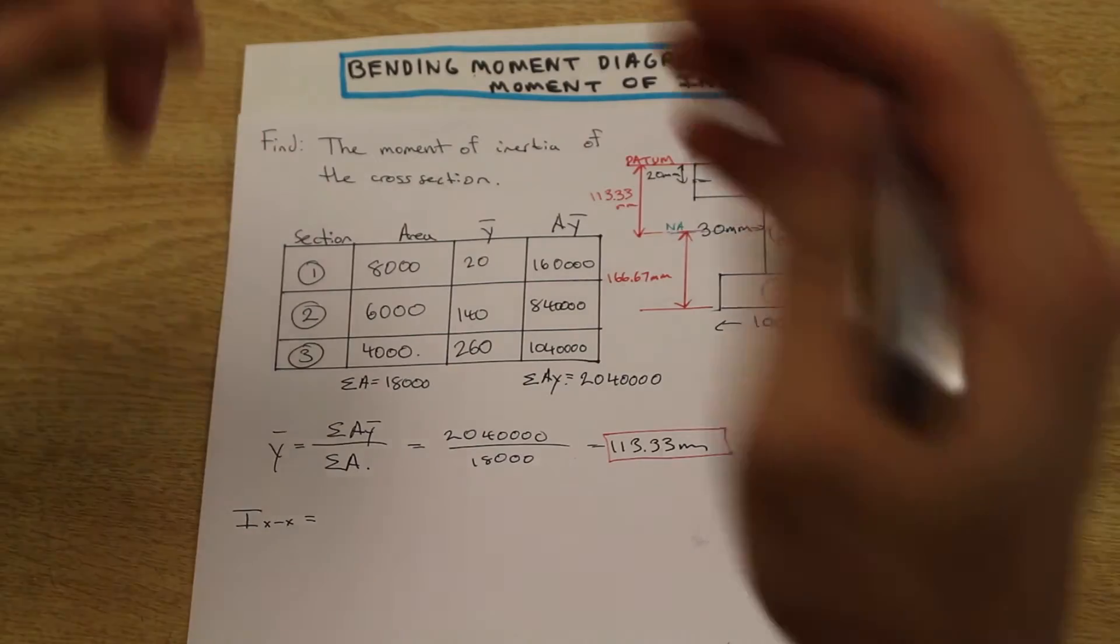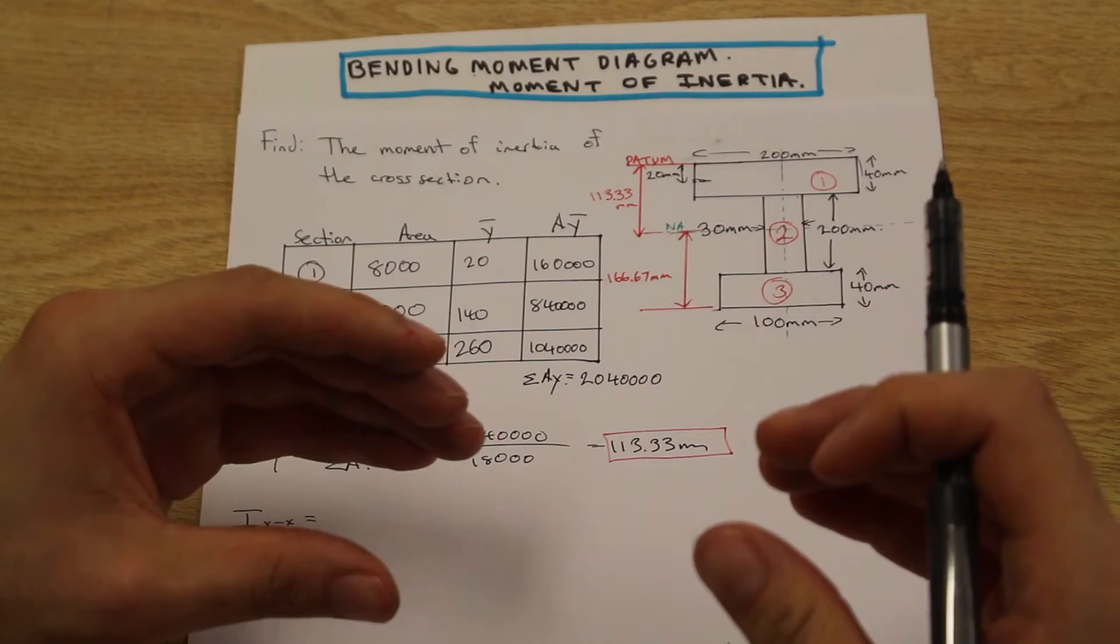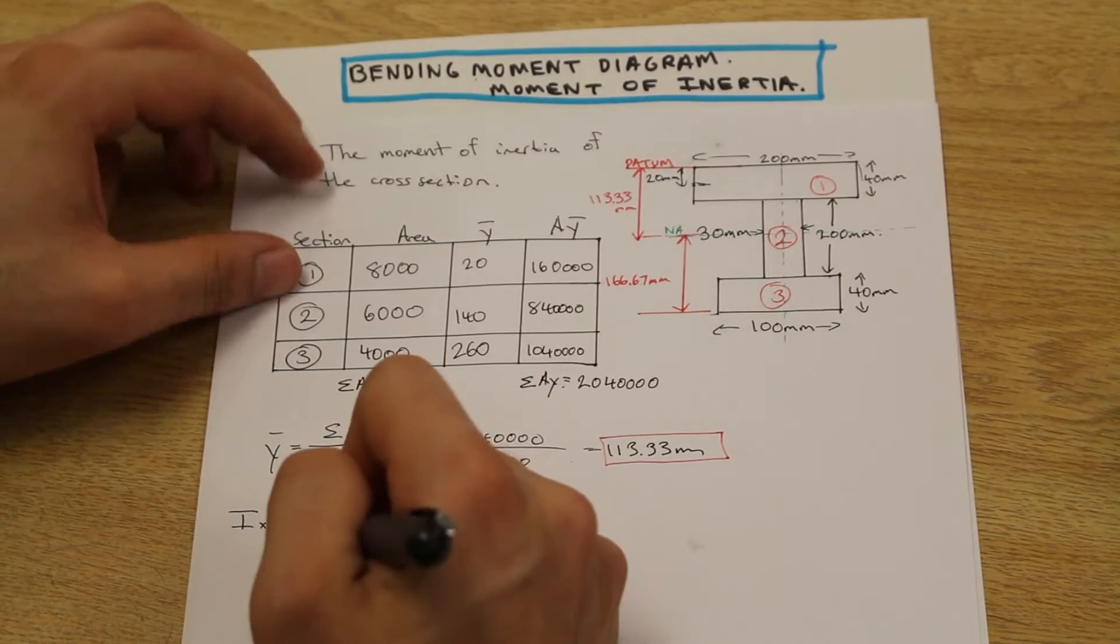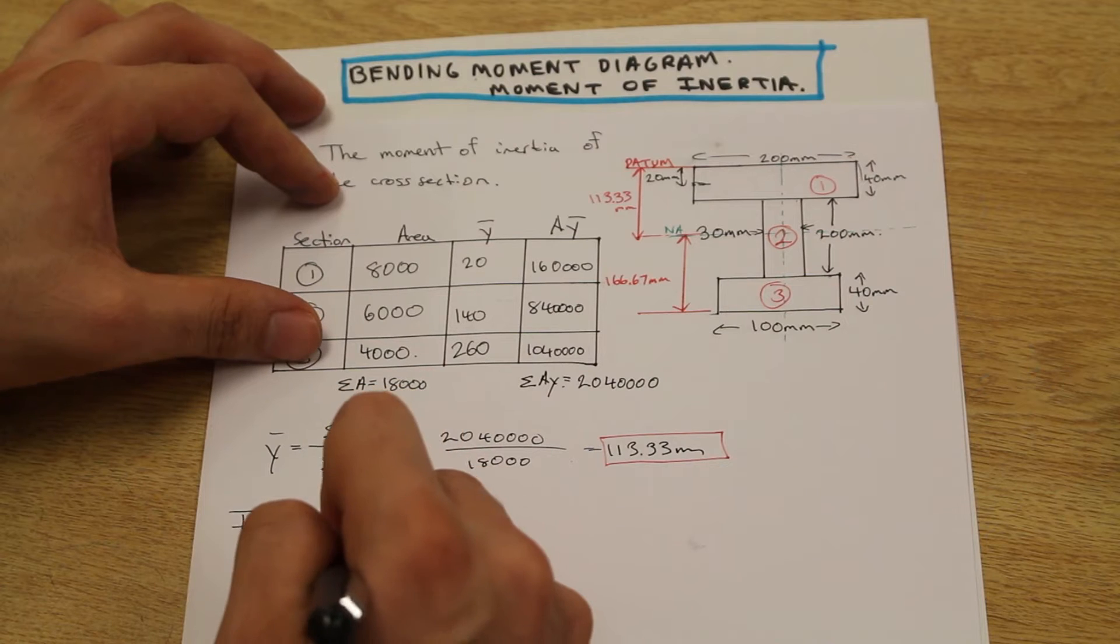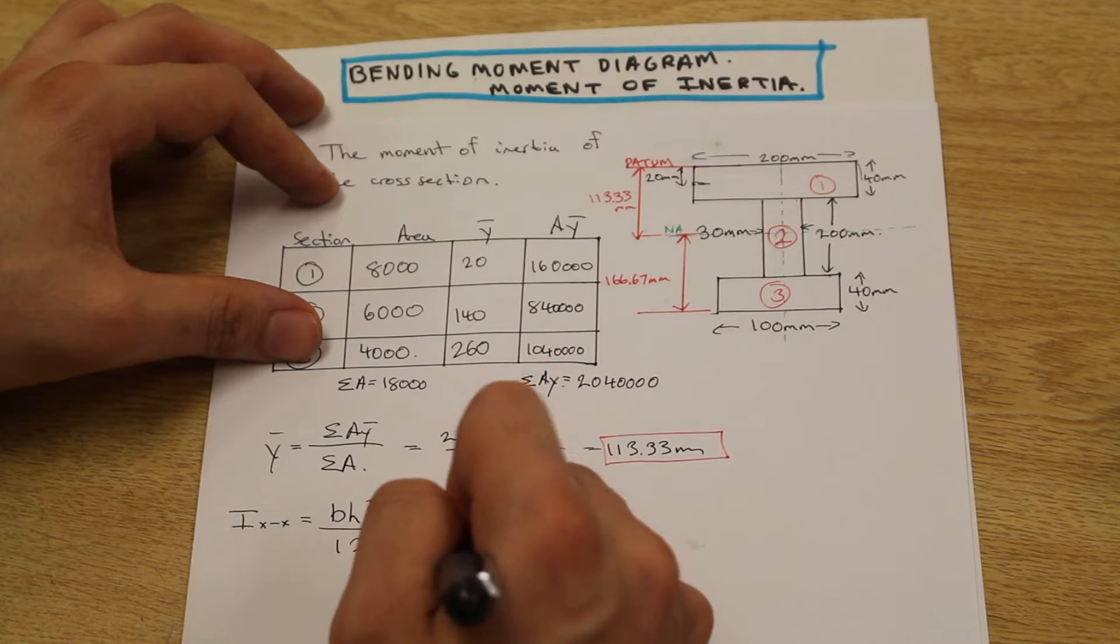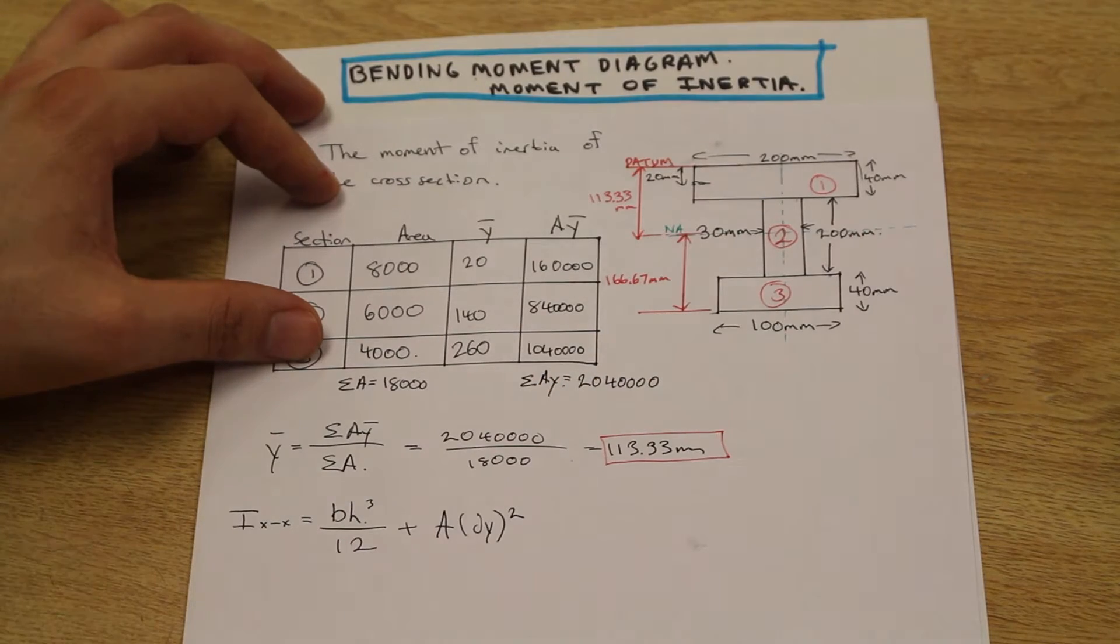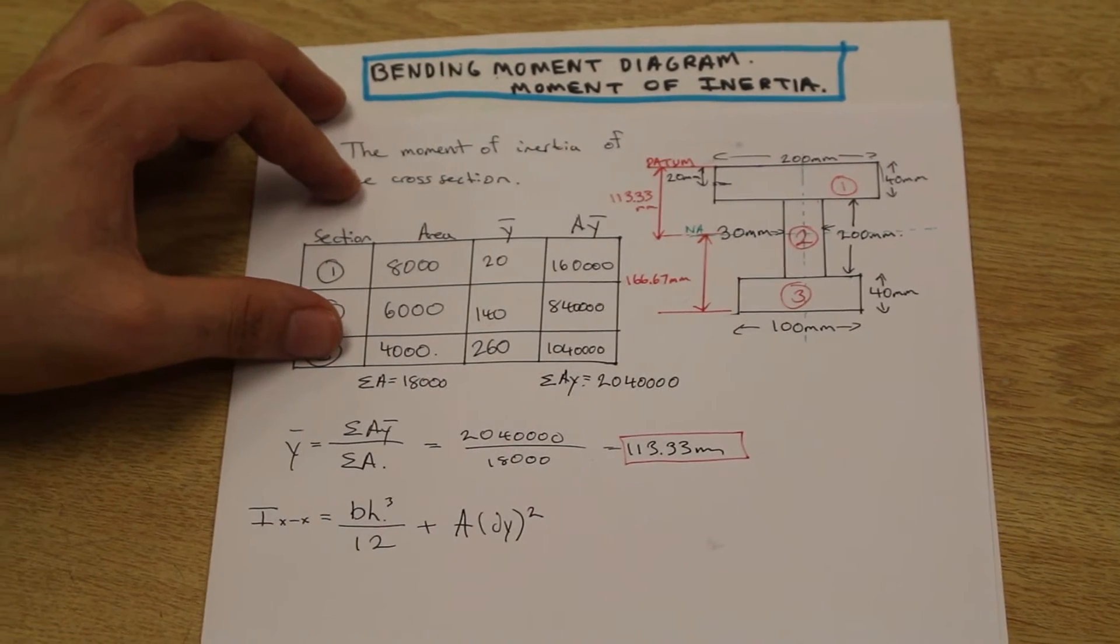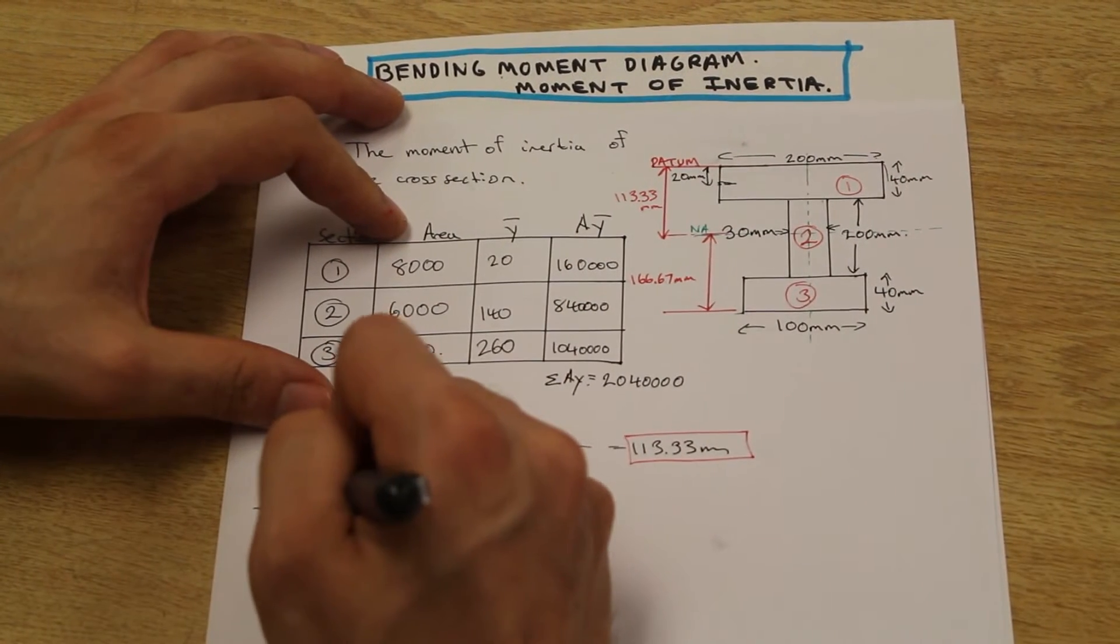Okay, so we remember the parallel axis theorem. For any shape in the cross-section whose own centroid is not going through the centroid of the entire cross-section, you need to apply the parallel axis theorem. What that means is you're taking a moment of inertia that's not on the x-axis and translating it to the x-axis. So let me write this down for you.